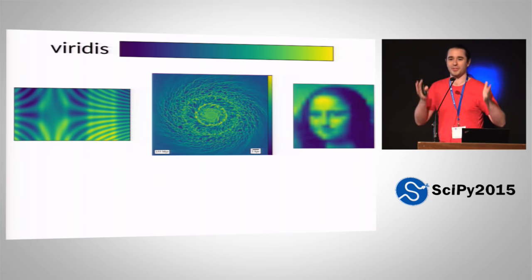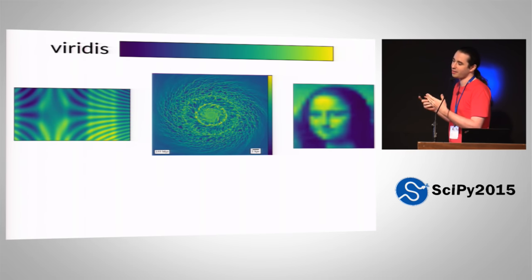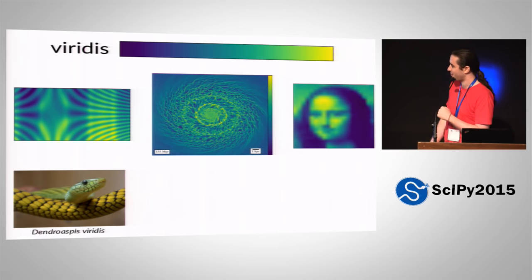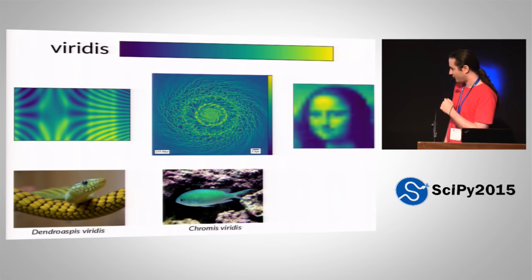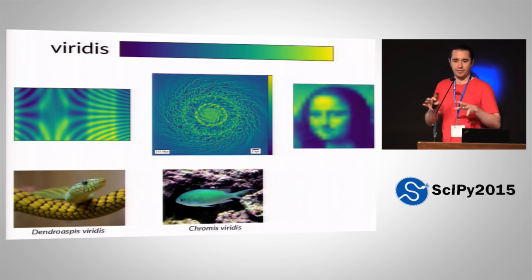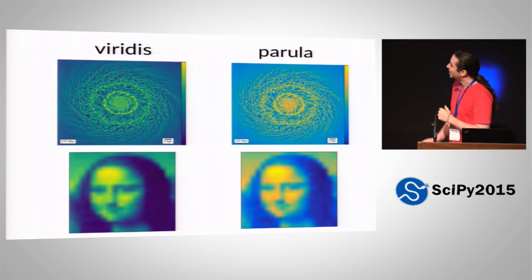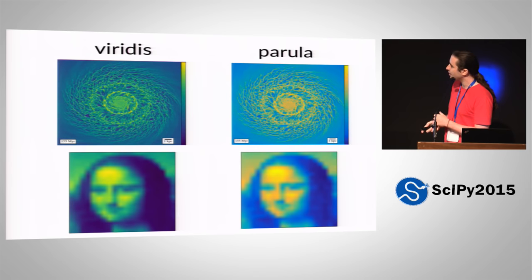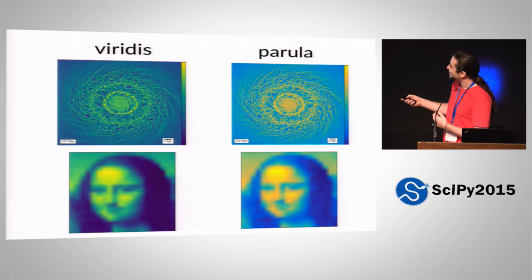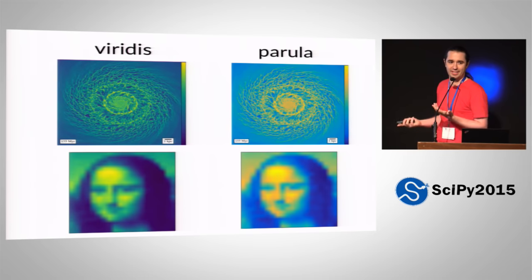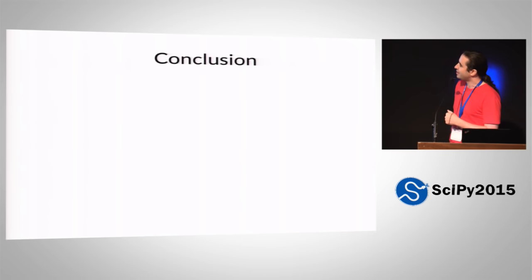Let me present our proposal for Matplotlib's new default color map. We're calling it Viridis — that's Latin for green. Of course, this is Python, so it's really named after a snake. If you don't like snakes, you can pretend it's named after a fish. Or if Matlab compatibility is very important, it can be named after a bird. Compared to Perula, we have more brightness variation, less hue variation. I like it better. You're allowed to use it. It avoids that annoying kink and uses a more sophisticated model.